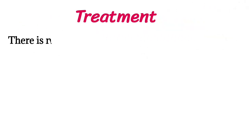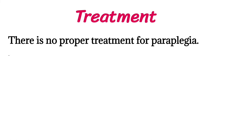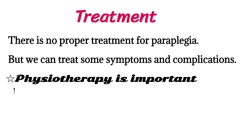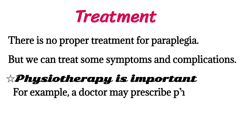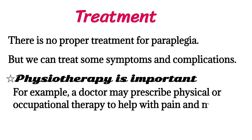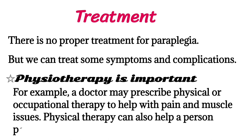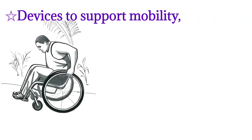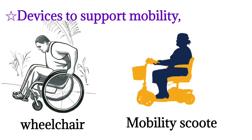There is no definitive treatment for paraplegia, but symptoms and complications can be managed. Physiotherapy is important — a doctor may prescribe physical and occupational therapy to help with pain and muscle issues, along with devices to support mobility like wheelchairs and mobility scooters.